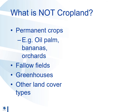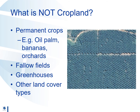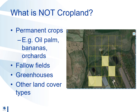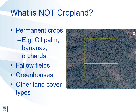We explained earlier that we define cropland here as annual crops. Thus permanent crops such as oil palm, banana plantations and orchards are not included in the definition. Here is an example of what oil palm looks like. Fallow fields are also not included and neither are greenhouses. This example shows greenhouses at the bottom and examples of cropland shaded in yellow. Any other land cover type is also not considered cropland — for example scattered trees, so you would leave this blank and press the submit button.